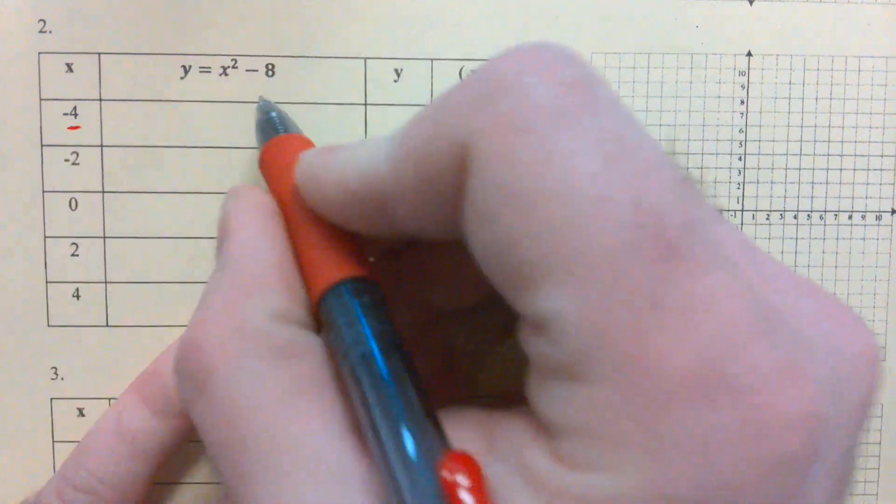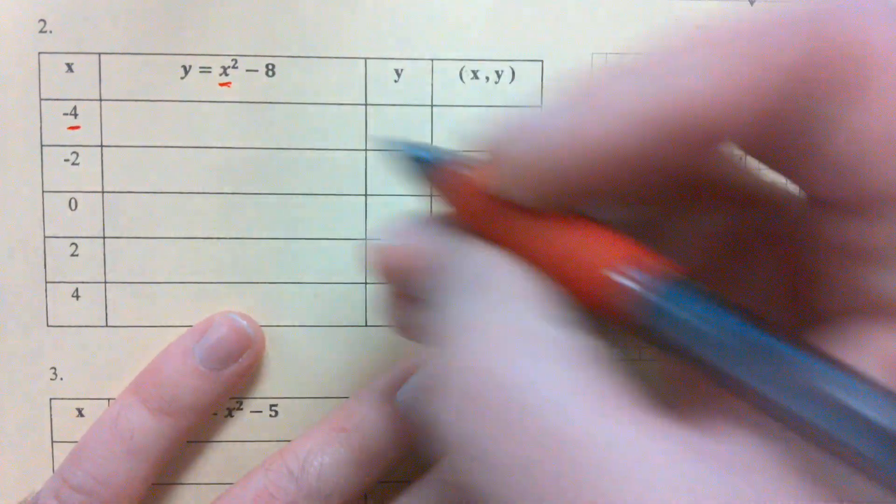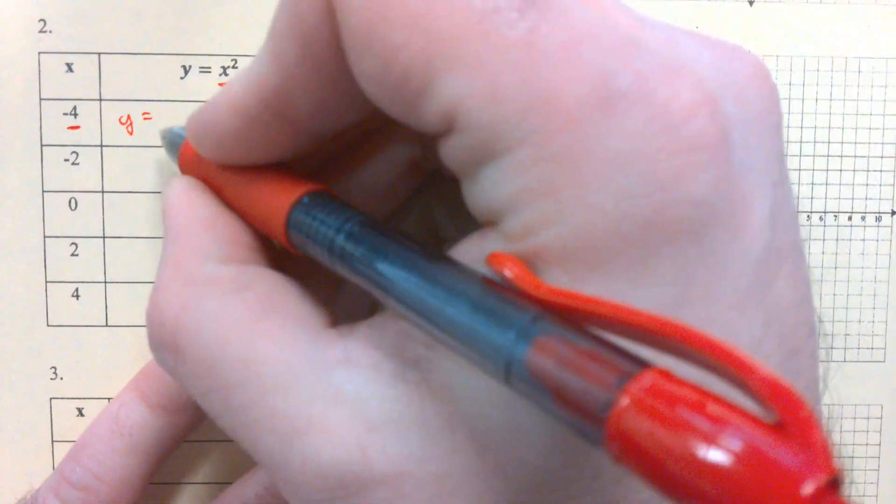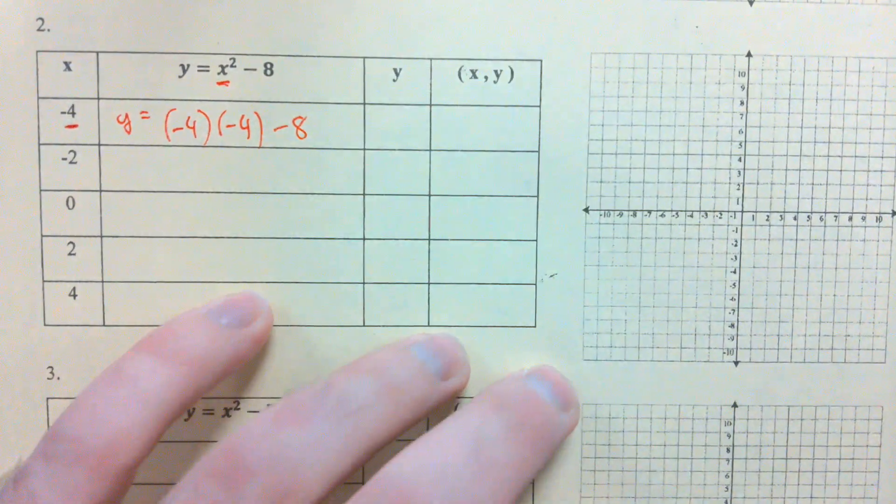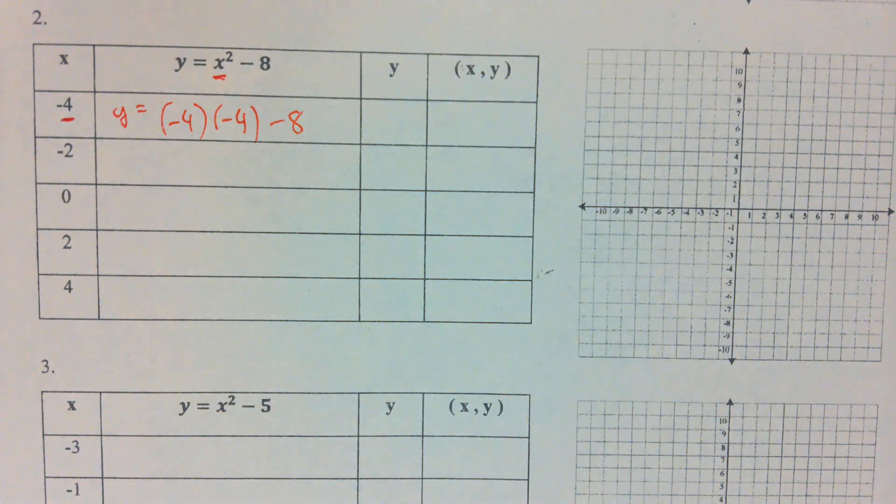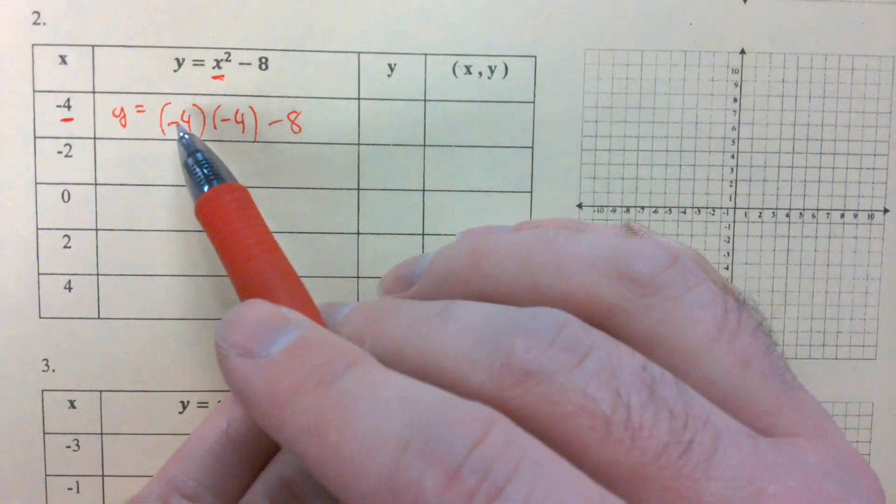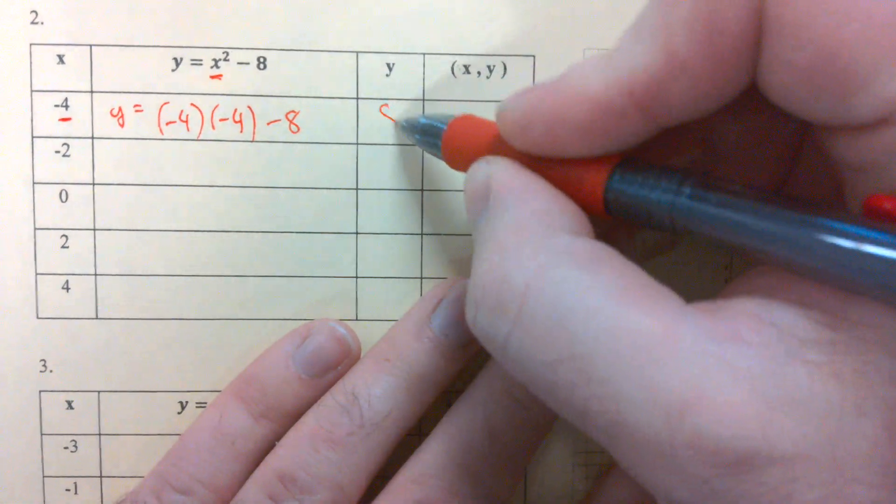I'm going to take my first x value, negative 4. Plug that right there, or plug that in for x. We've got negative 4 times negative 4 minus 8. You can tell me what's negative 4 times negative 4. 16. 16 minus 8 gives me what, Daris? 8.